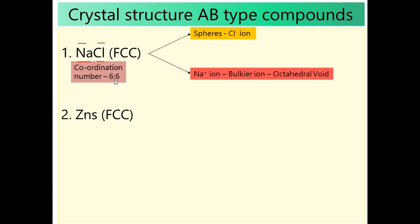The second structure is ZnS. ZnS also follows FCC structure. Sulfide S²⁻ is the anion and Zn²⁺ is the cation. Sulfide occupies the sphere position. In FCC, we have 8 corner atoms and 6 face atoms for the sphere. The number of Zn²⁺ ions is equivalent to the number of sulfide ions, so we have two possibilities.